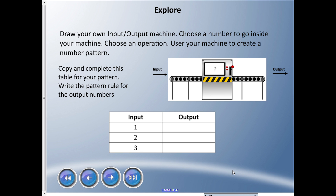Now you can build your own input-output machine. You don't have to draw something fancy — just an arrow going into a box is fine. Choose a number to go into your machine; I recommend starting with one, two, and three. Choose an operation: are you going to add, subtract, divide? Have something come out the other end. Input one, two, and three into your table and figure out what the output is going to be.